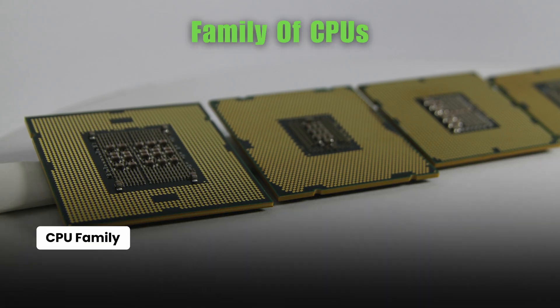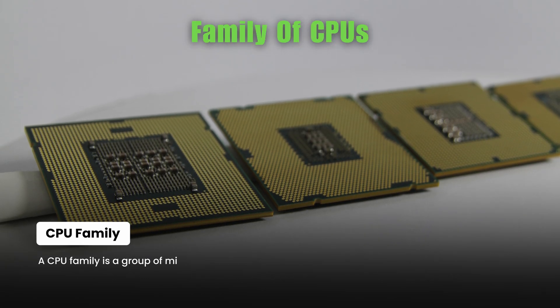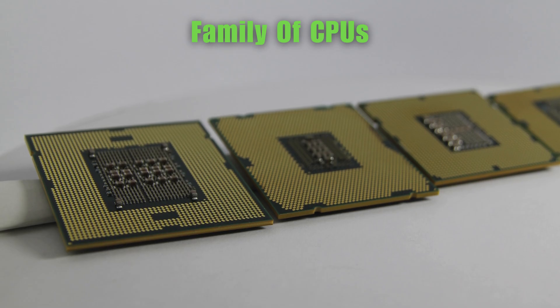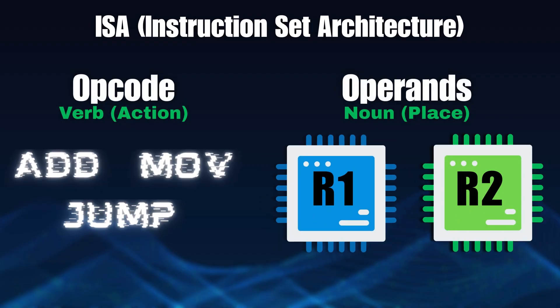Machine code, that binary format, is highly structured. Each family of CPUs has its own unique blueprint for the structure, called an instruction set architecture, or ISA. Each instruction is made of two main parts: the opcode, which specifies the action to perform — like add, move, or jump — and then the operands, which specify the data or memory locations to use for that action.